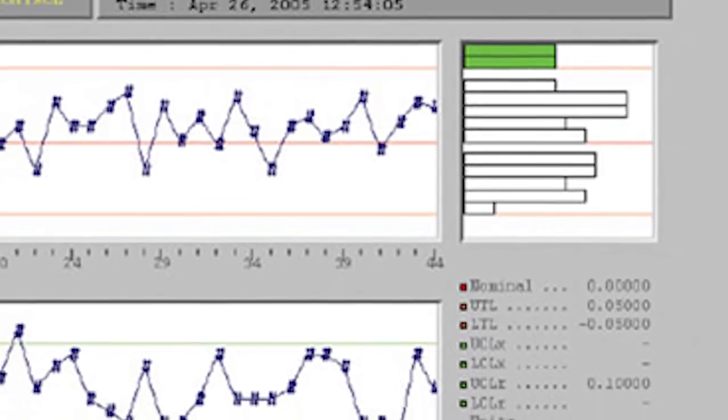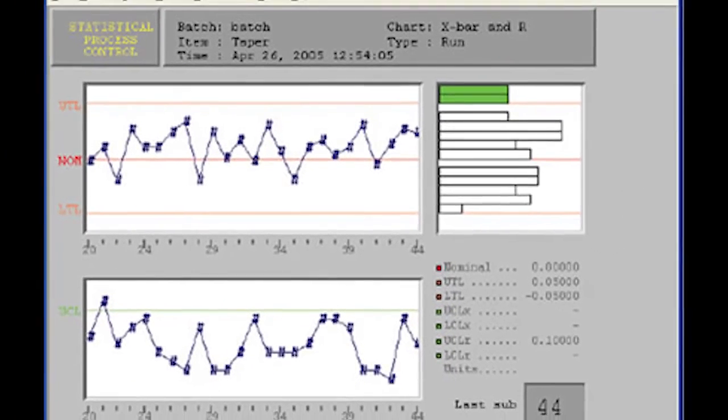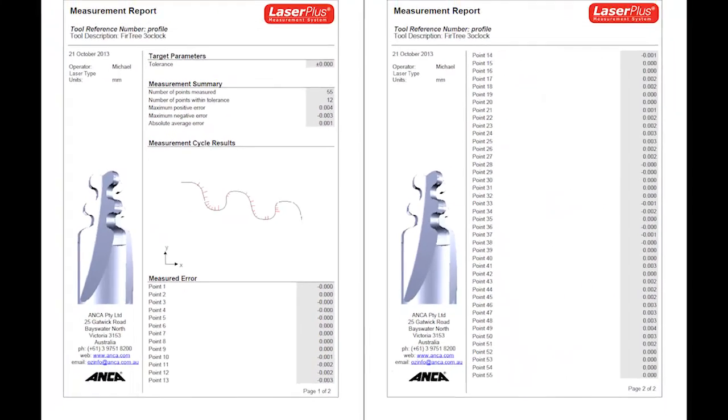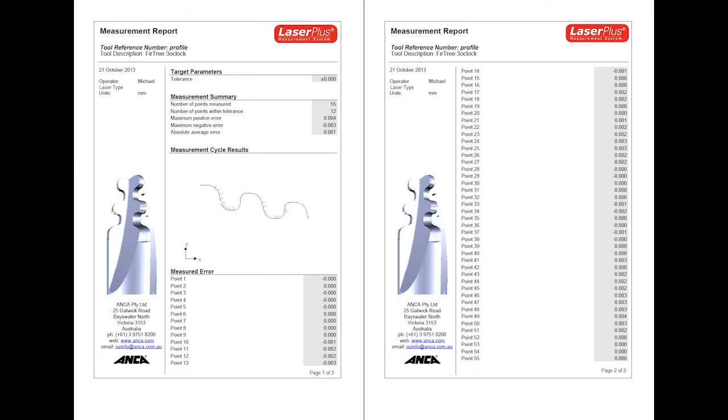Laser Plus can work in conjunction with statistical process control software for CPK analysis. Additionally, users are able to generate and print out tool reports in PDF format.